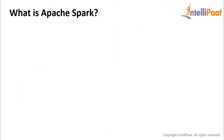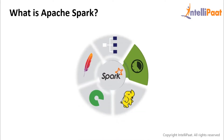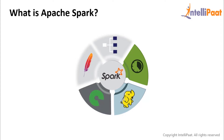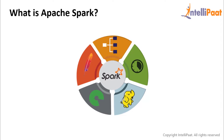Now let us understand Spark briefly. Spark is a cluster computing framework for real-time processing. It was introduced as a sub-project in the UC Berkeley R&D lab in 2009, became open source in 2010, and in 2013 was donated to the Apache Software Foundation. It provides an interface for programming entire clusters with implicit data parallelism and fault tolerance.